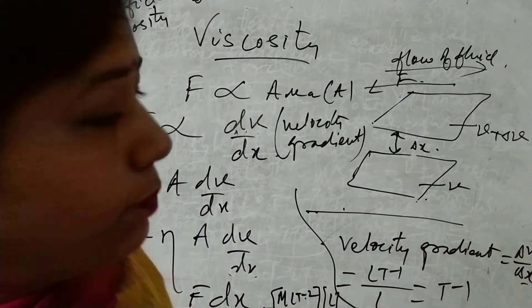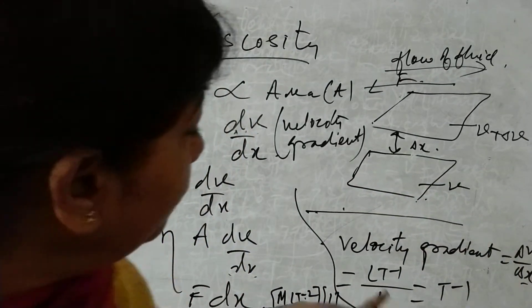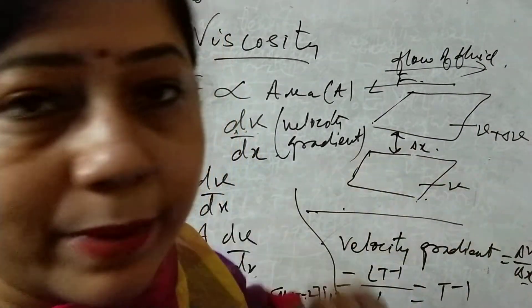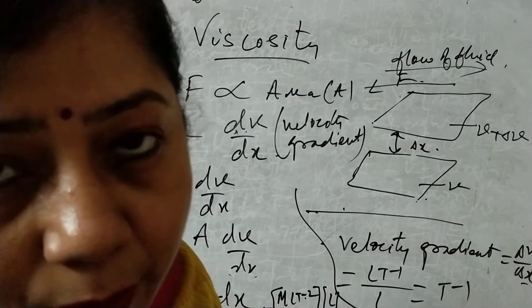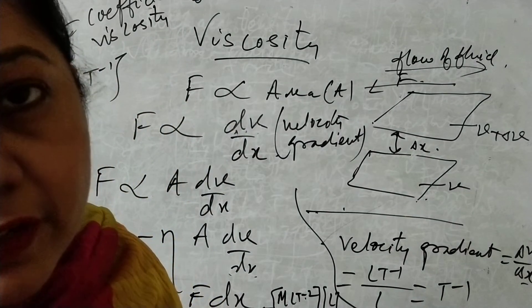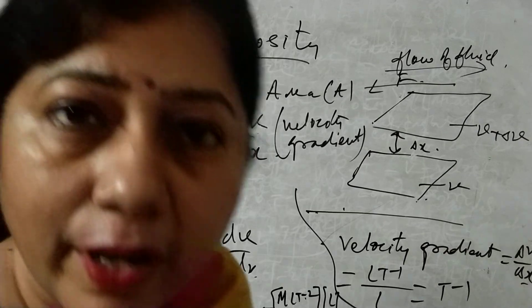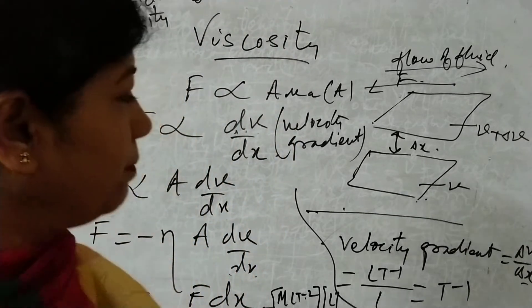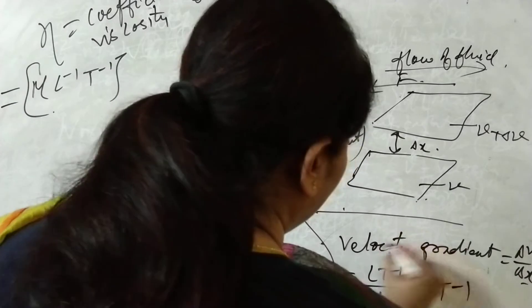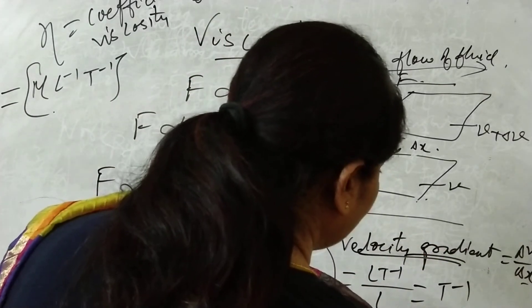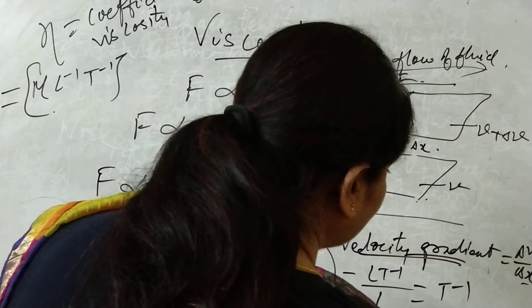The velocity gradient — change in velocity with respect to distance — gives dimensional formula T⁻¹. Since there is no mass or length remaining, velocity gradient is M⁰L⁰T⁻¹.